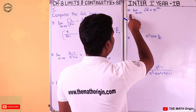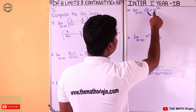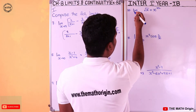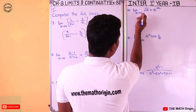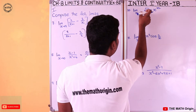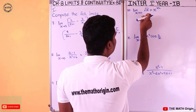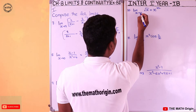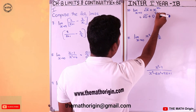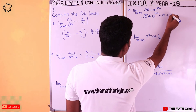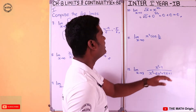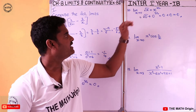Tenth question: limit x tends to 0 of √x + x^(5/2). We substitute x = 0 directly: √0 + 0^(5/2) = 0 + 0 = 0. With this, we completed the tenth question.